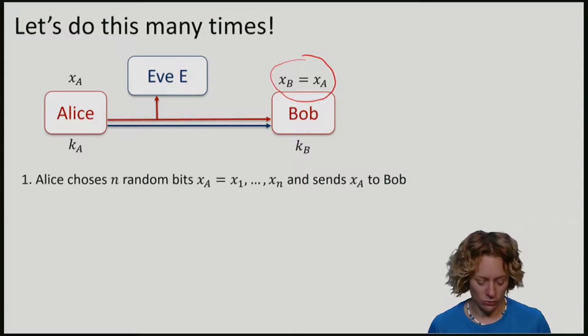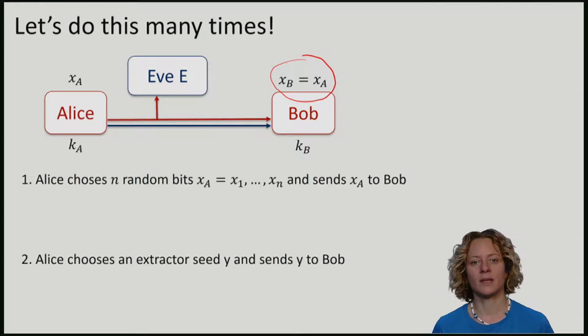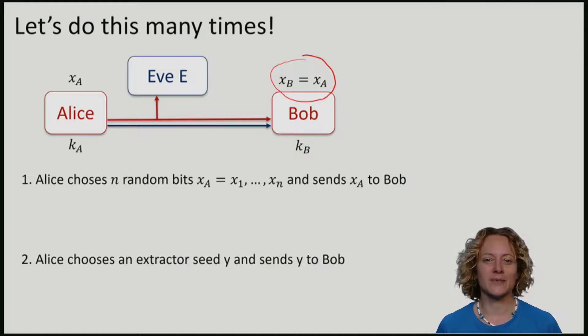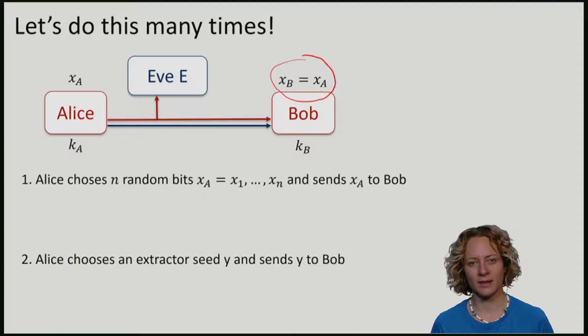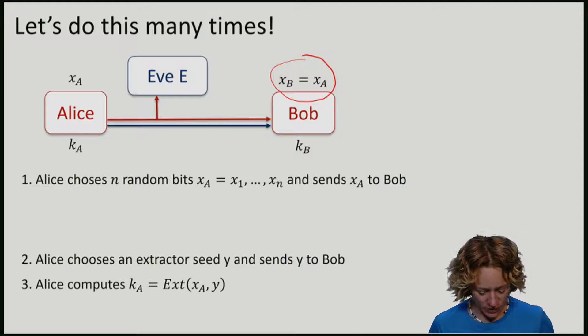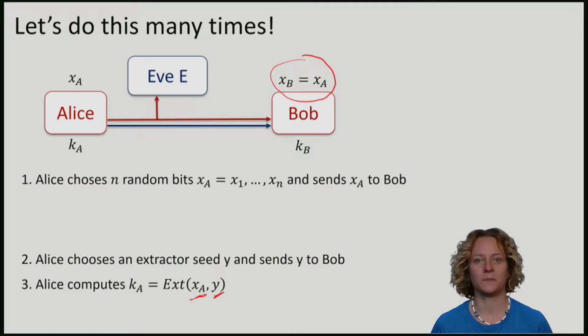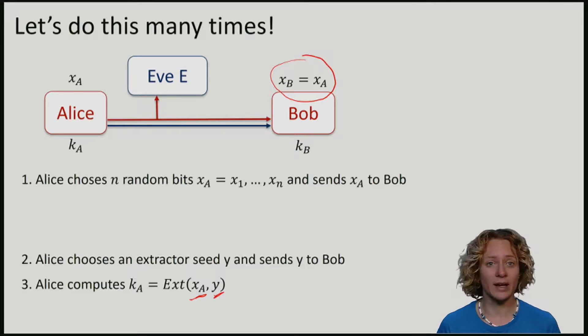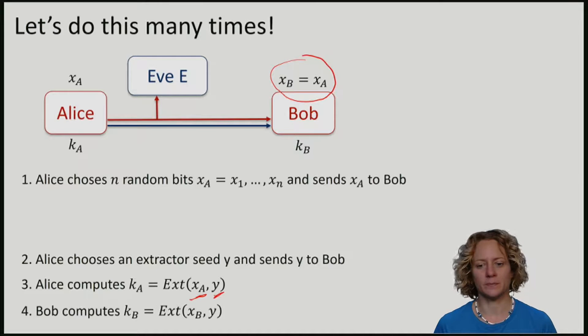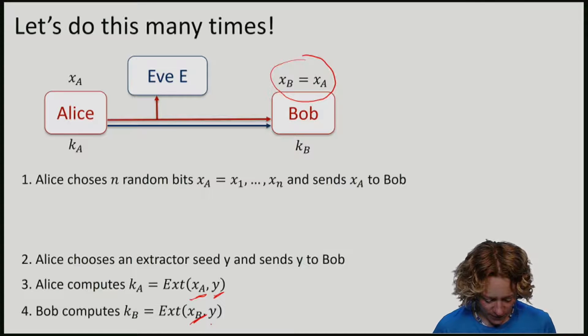Alice now chooses a random string y. You have already learned about randomness extractors and y is the seed of the extractor. And she sends y all to Bob. Alice now computes ka being the extractor function ext applied to the string xa and the seed y. Because she told Bob through the classical authenticated channel what y is, Bob can apply the same function. So he computes kb being equal to ext applied to xb and y.